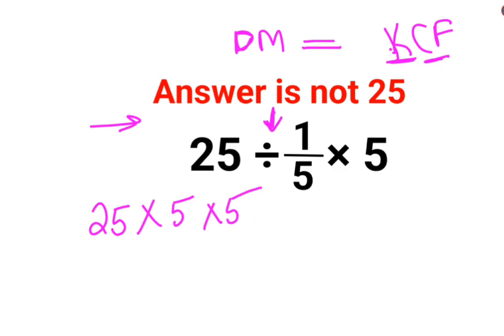And we will continue to write the rest of the question as it is. So we have 25 into 5 gets you 125, multiplied by 5 gets you the answer as 625.